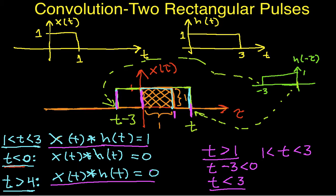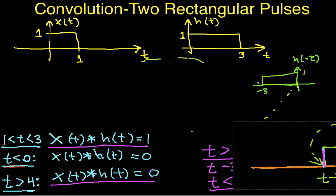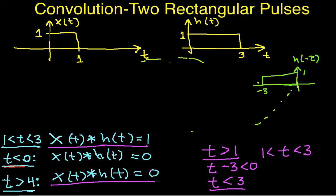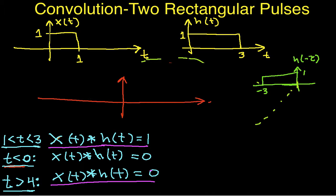So let's look at the case of what happens when T is between 0 and 1. We'll clean up this mess and redraw our X. This is X of tau, and now we're going to assume that T is between 0 and 1.